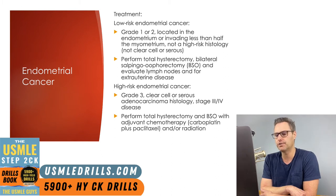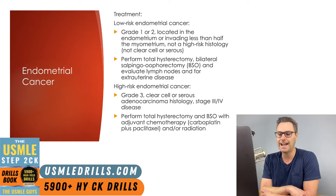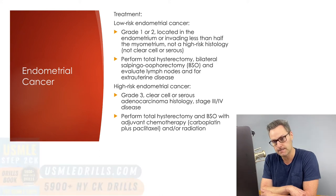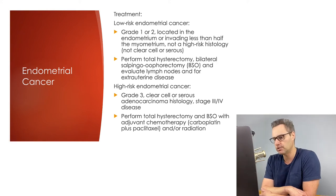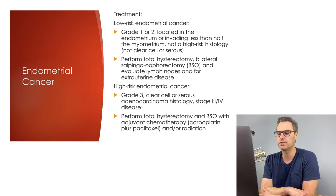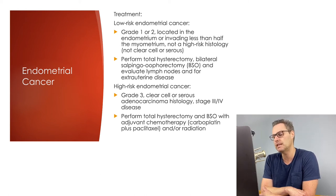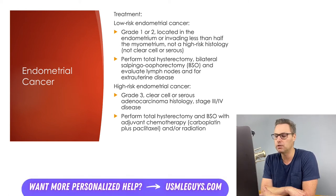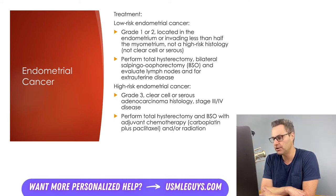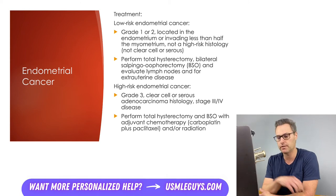For patients fitting the criteria for low-risk endometrial cancer, the treatment will be total hysterectomy, bilateral salpingo-oophorectomy, as well as evaluation of lymph nodes and for extra-uterine disease. For patients with high-risk endometrial cancer — meaning grade 3, clear cell or serous adenocarcinoma histology — these patients should have a total hysterectomy and BSO with adjunct chemotherapy, typically carboplatin plus paclitaxel, and/or radiation therapy depending on individual patient factors.